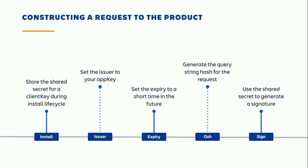What about sending a request to the product? Again, during the install lifecycle, you store the shared secret with the client key. Then, when you want to generate a request, you set the issuer to your application's unique app key, set the expiry to a short time in the future, and generate a query string hash based on the request parameters. Then you use the shared secret to generate a signature. There you have it — you send the complete JWT token to the product.